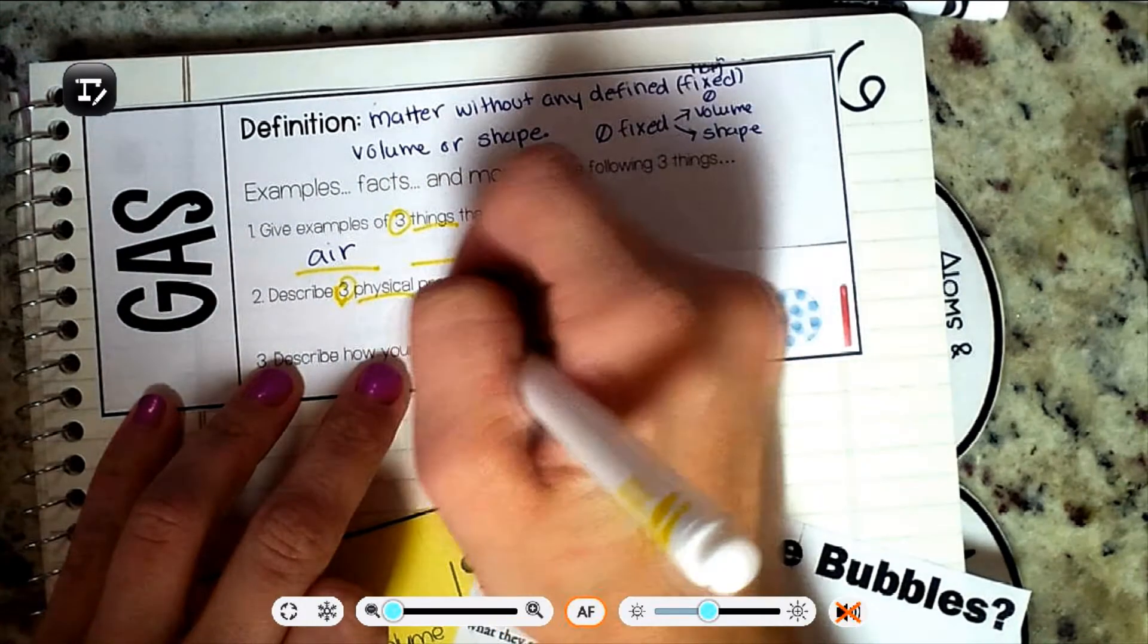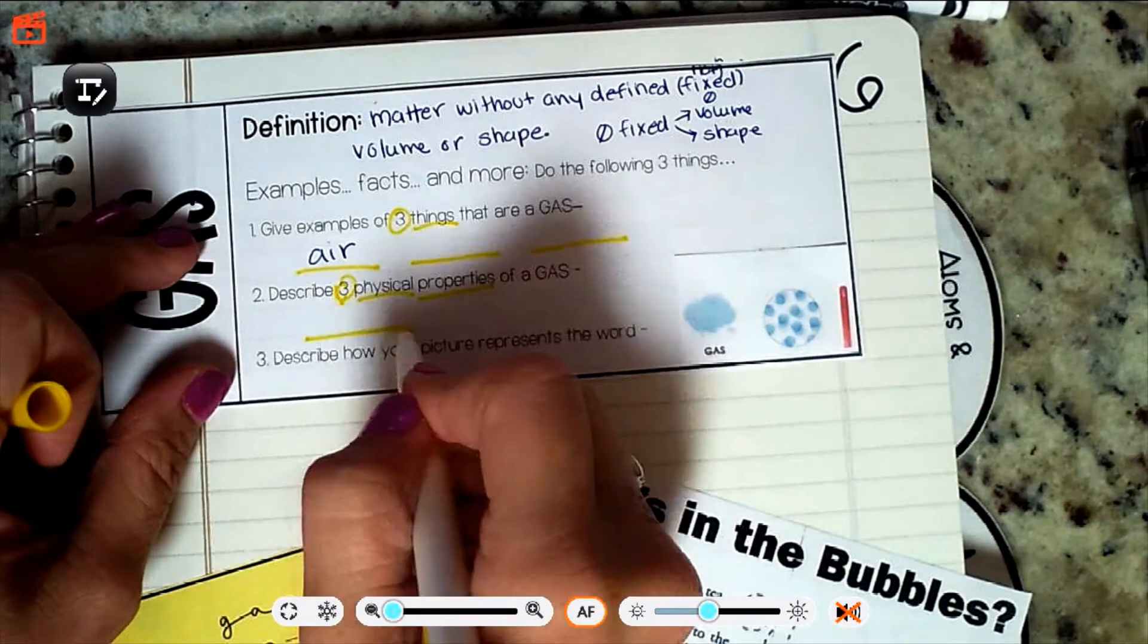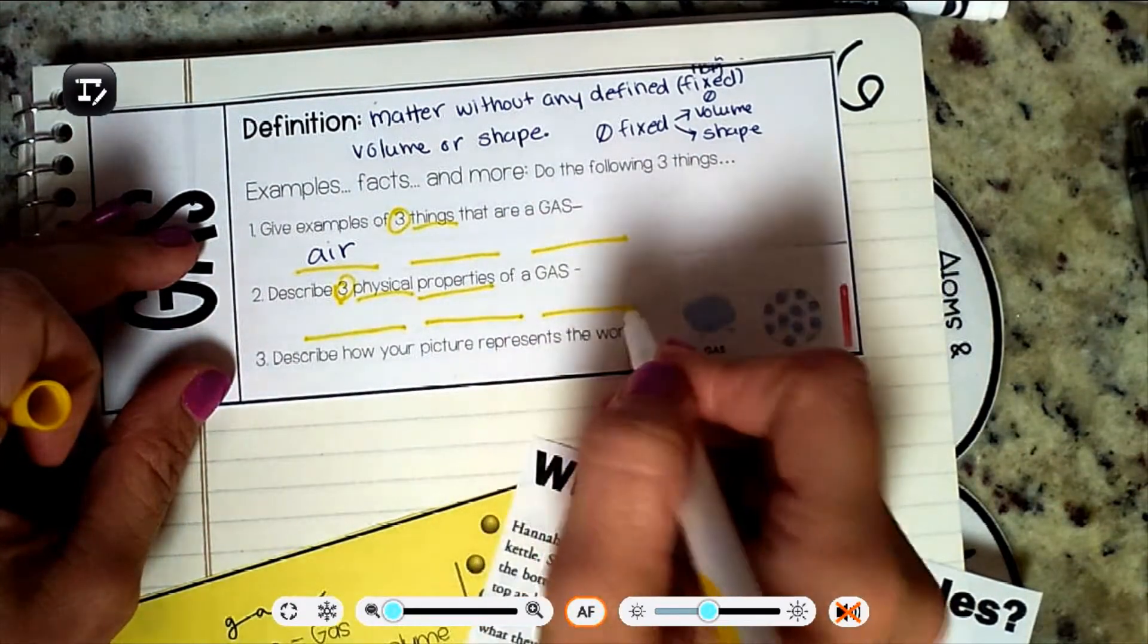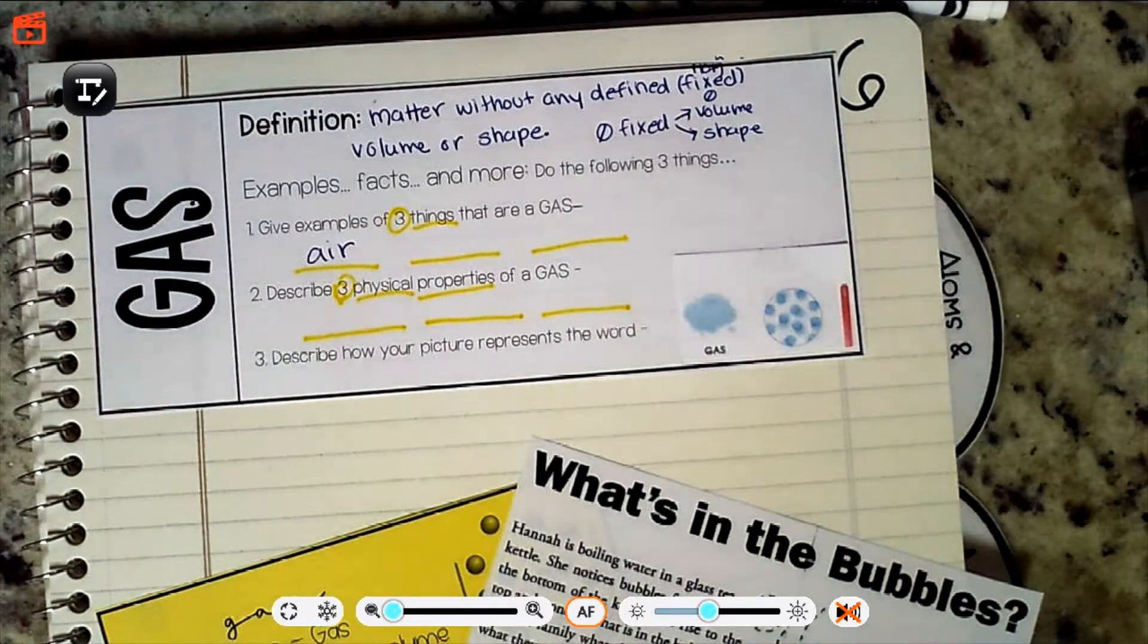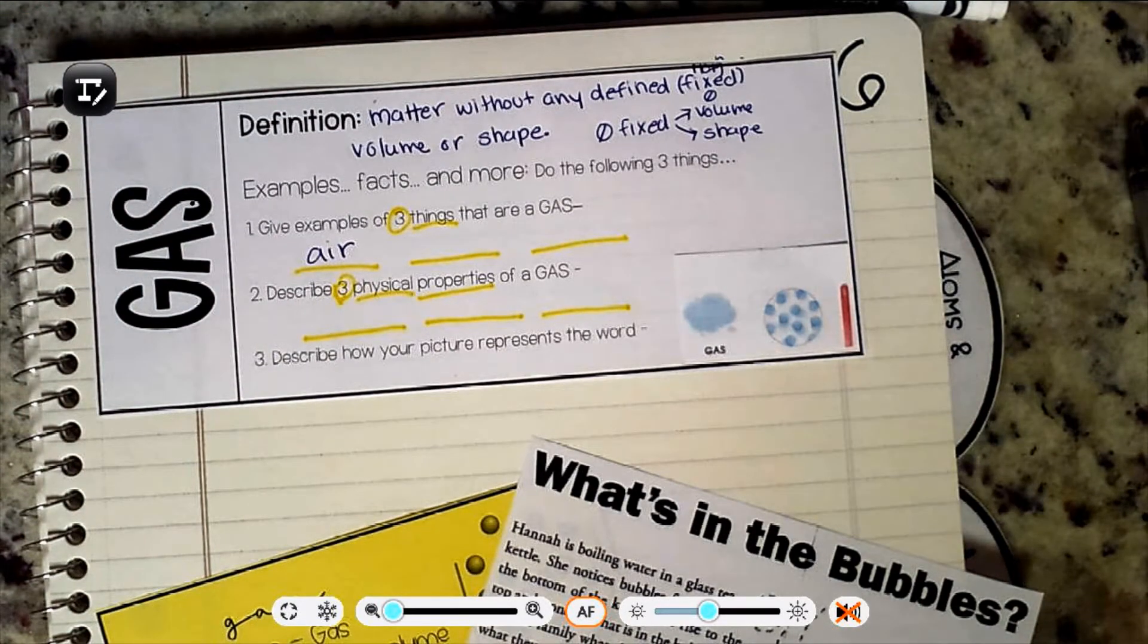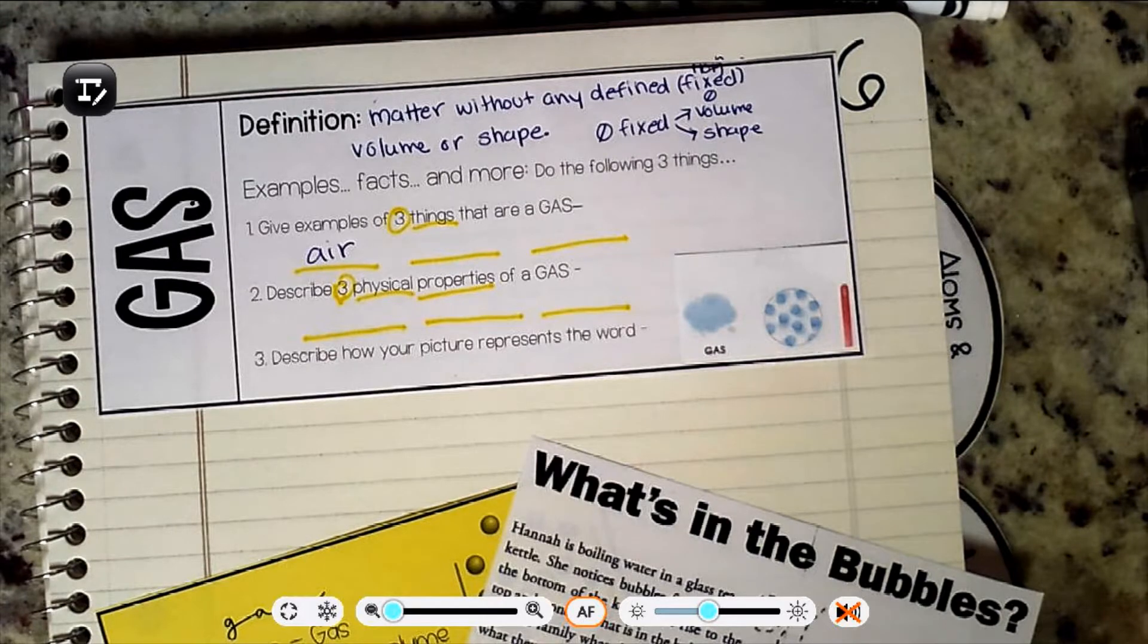Three physical properties of a gas. So we're going to look those up. Remember, one two three. Physical property is what? It's something that we can observe without doing anything to the matter.